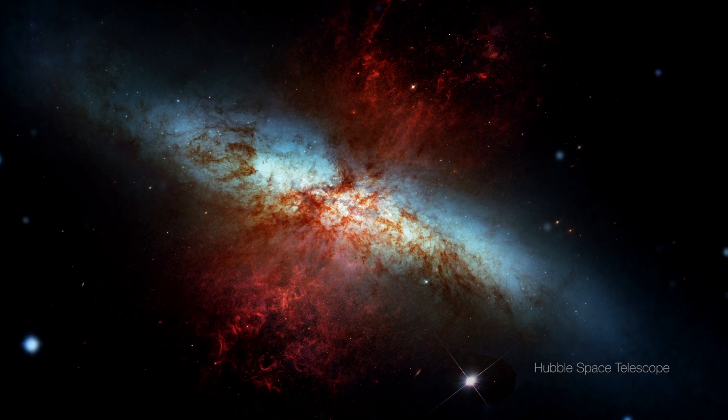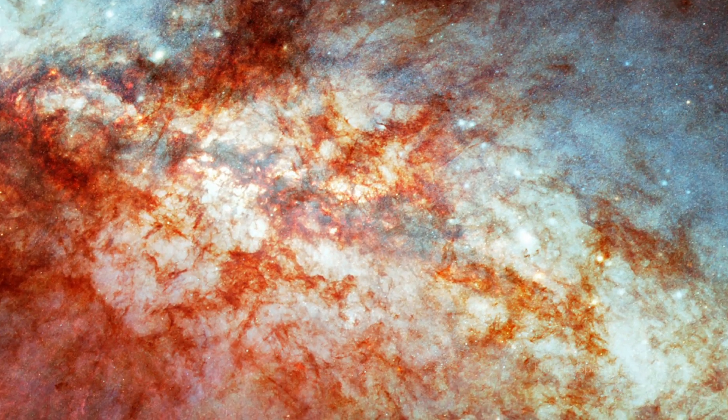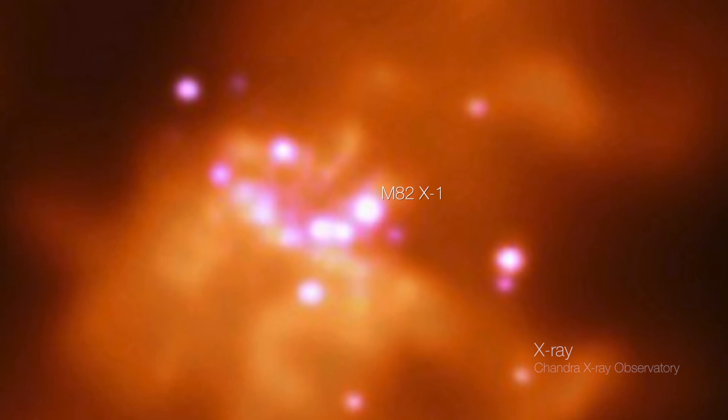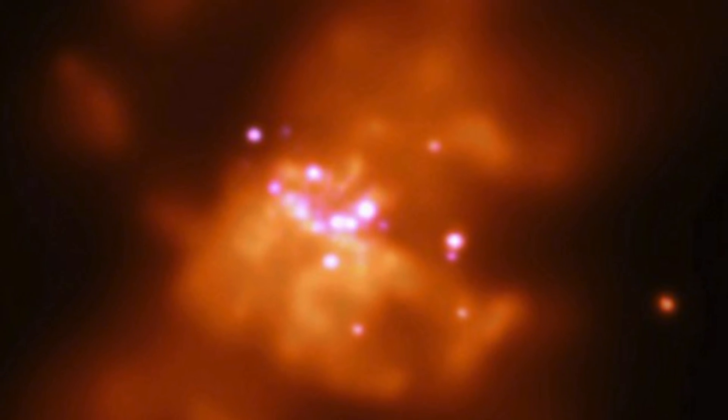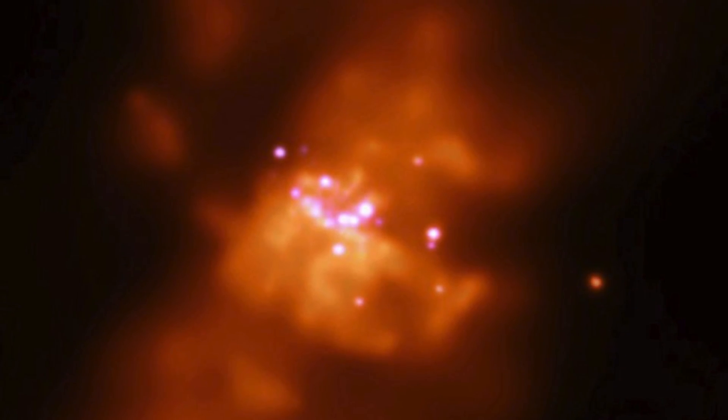Known as M82X1, the object is the galaxy's brightest X-ray source. It was long suspected of being an exceptional mid-sized black hole, too big to be made by a dying star, yet much smaller than the monsters found in the hearts of galaxies. But definitive evidence had never materialized.